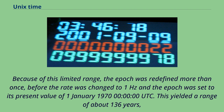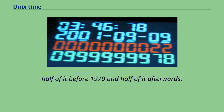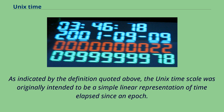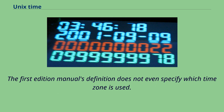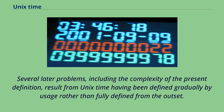This yielded a range of about 136 years — half of it before 1970 and half afterwards. The Unix timescale was originally intended to be a simple linear representation of time elapsed since an epoch. However, there was no consideration of the details of timescales, and it was implicitly assumed that there was a simple linear timescale already available and agreed upon. The first edition manual's definition does not even specify which time zone is used. Several later problems, including the complexity of the present definition, result from Unix time having been defined gradually by usage rather than fully defined from the outset.